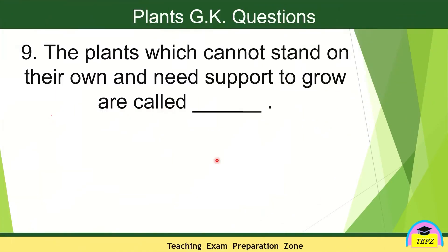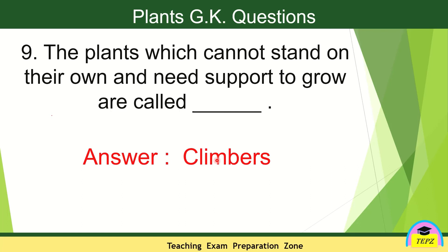The plants which cannot stand on their own and need support to grow are called climbers. Climbers have very thin and weak stems — they cannot stand on their own and they need support to grow. An example of a climber is grapevine.